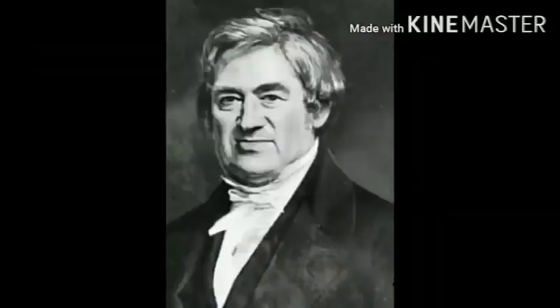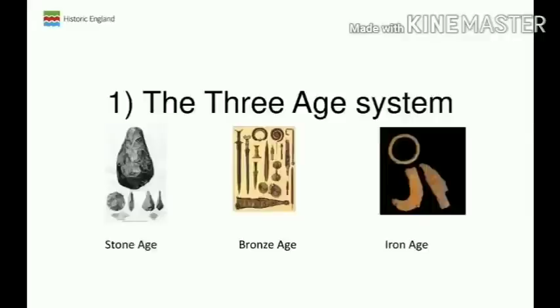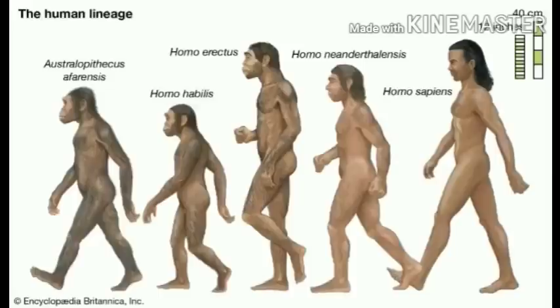C.J. Thompson proposed a three-age system which helps to understand the history of prehistoric people. He divided the artifacts that were in a museum as Stone Age, Bronze Age and Iron Age.